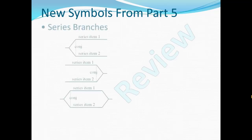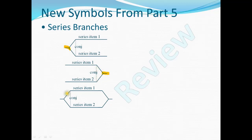In part five, we learned two new symbols. First, we learned the series branches. You see three forms of series branches here. Sometimes you need the common stub on the left end of the branch, sometimes on the right end, and sometimes on both ends. So we have these different forms of the series branches for their respective purposes.